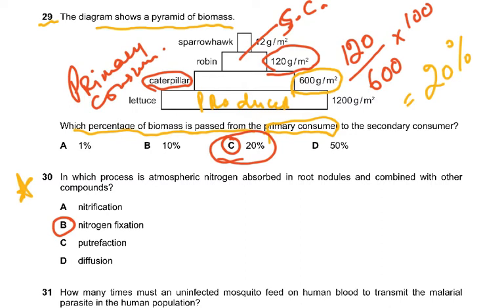Question 30 is mentioned in the examiner's report: confusion between the terms nitrification and nitrogen fixation. In which process is atmospheric nitrogen absorbed in root nodules and combined with other compounds? That is nitrogen fixation — it cannot be anything else. Root nodules are all about nitrogen-fixing bacteria in the root nodules of leguminous plants.